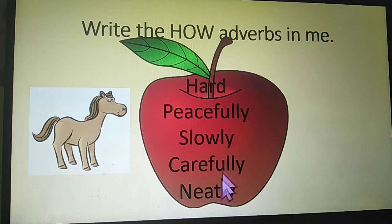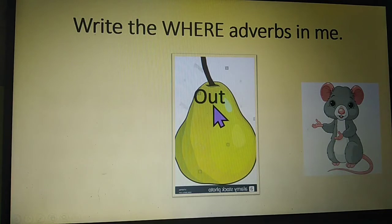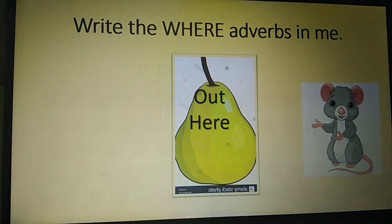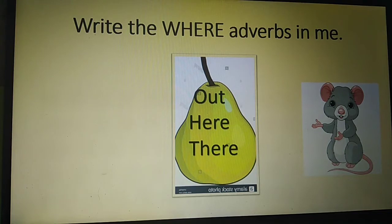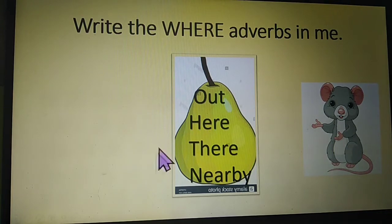I hope all of you got all these words — please write them on the apple. The next fruit is a pear. Write the where adverbs in me. Let's check one by one. The first word is out — you can see this in question number two. Where have your parents gone? The answer is out. So out is an adverb of place or where adverb. The second adverb is here and there — in question number five, where did the mice run? The mice ran here and there. The next adverb is nearby — in the last sentence, there is a post office nearby. Where is the post office located? Nearby. There are four adverbs of place: out, here, there and nearby.